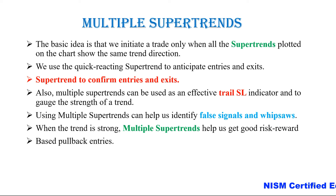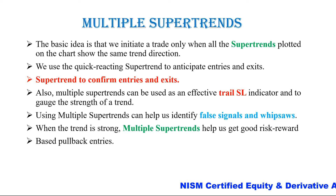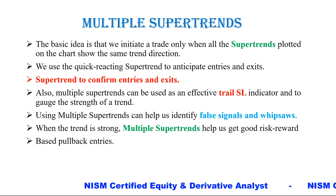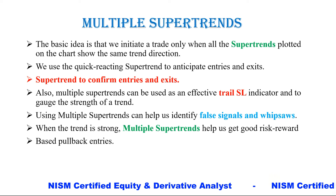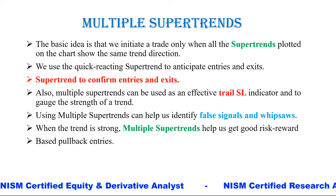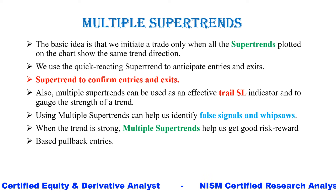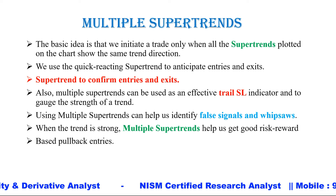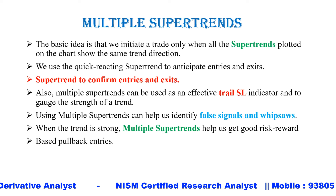Both supertrends should show in the same direction. We use a quick-reacting supertrend to anticipate entries and exits, and a slower supertrend to confirm them. Multiple supertrends can also be used as an effective trailing stop-loss indicator and to gauge the strength of the trend. We can trail the stop loss when we are in long and short trades. Using multiple supertrends also helps to identify false signals and whipsaws in sideways markets.